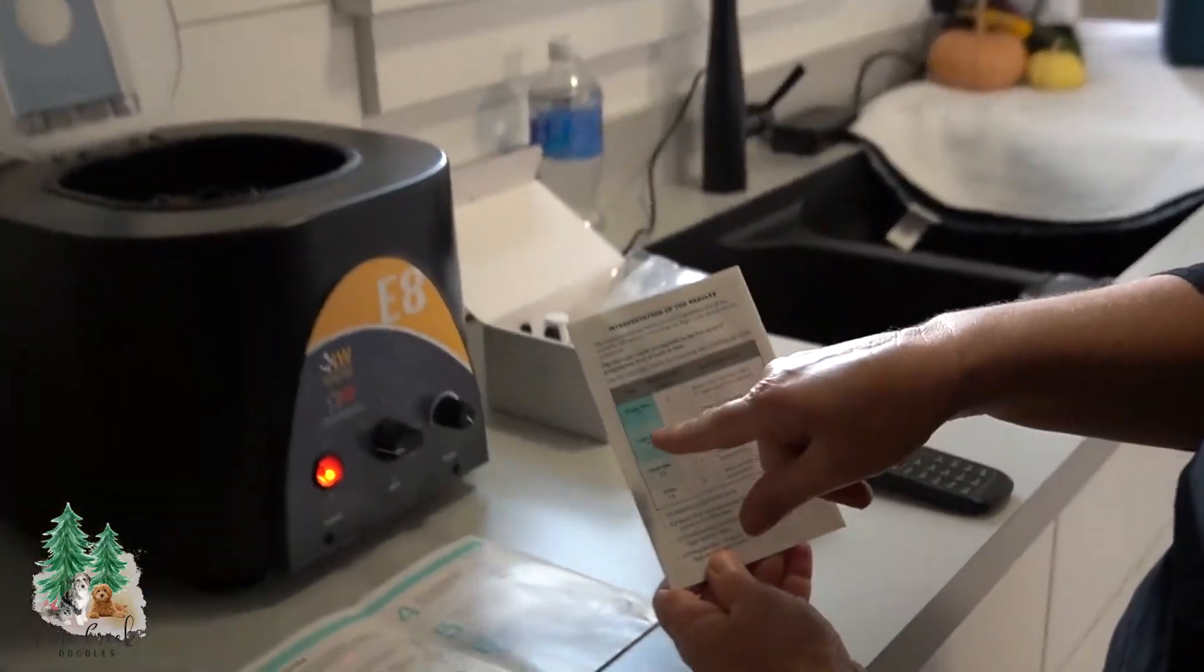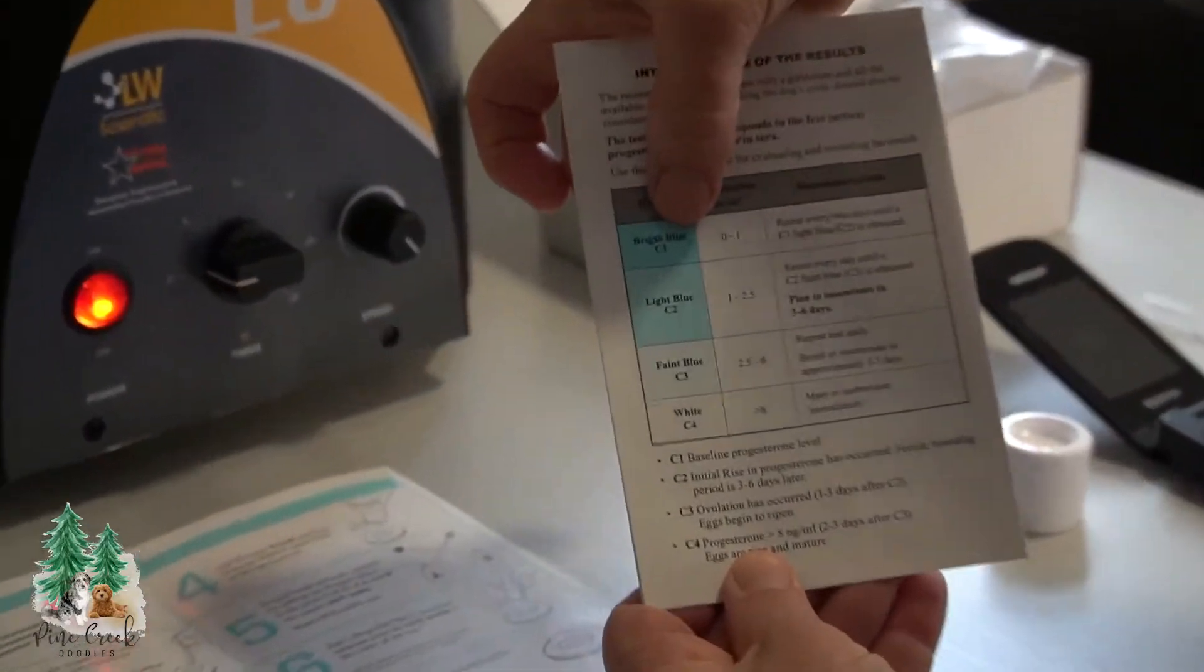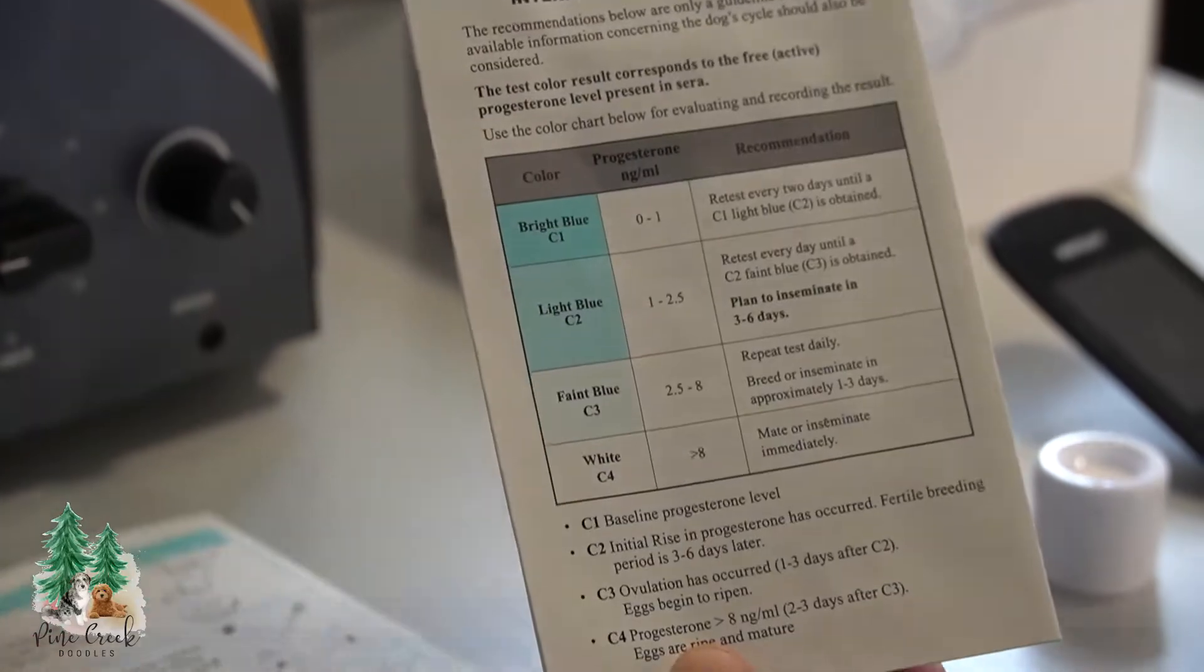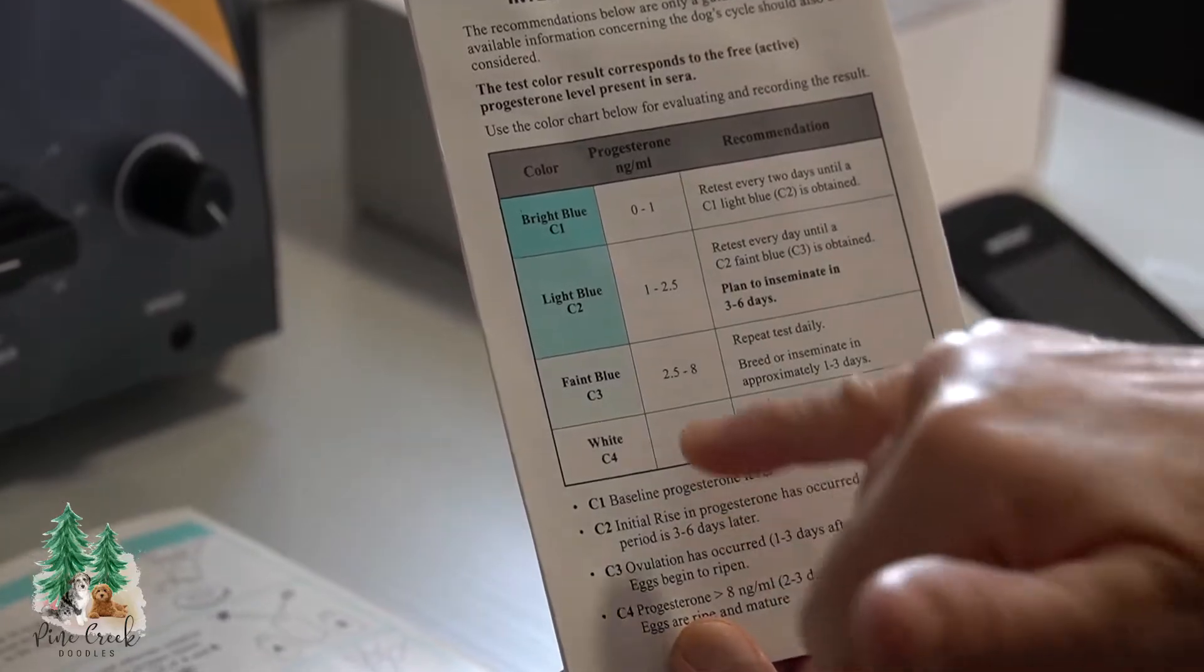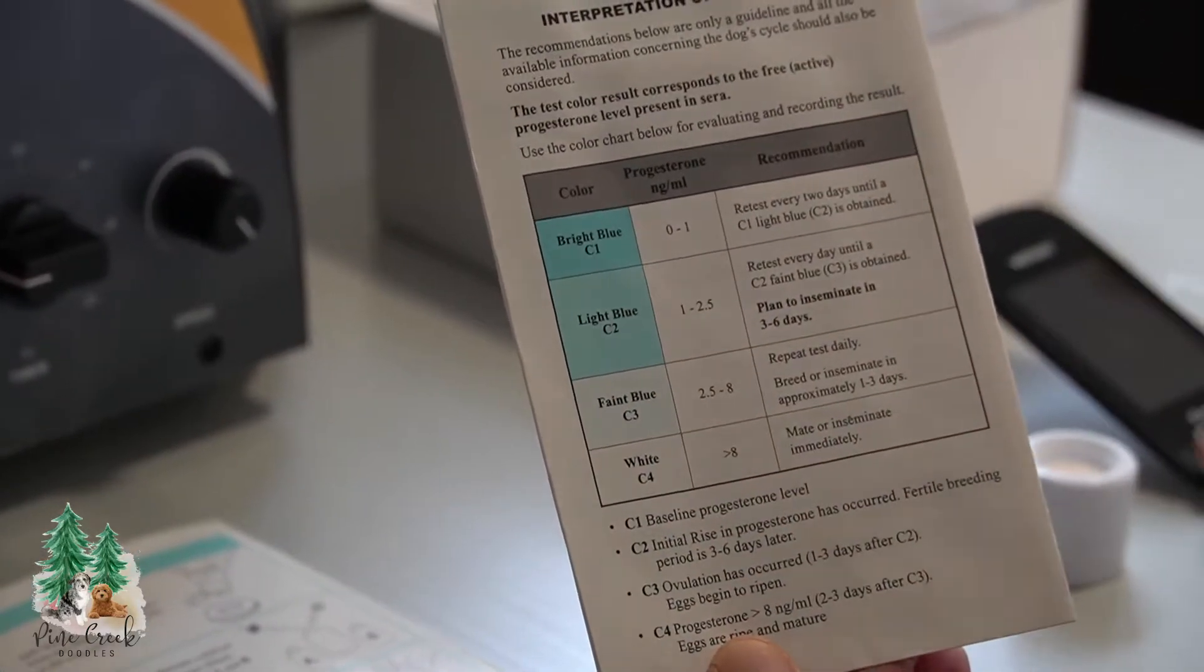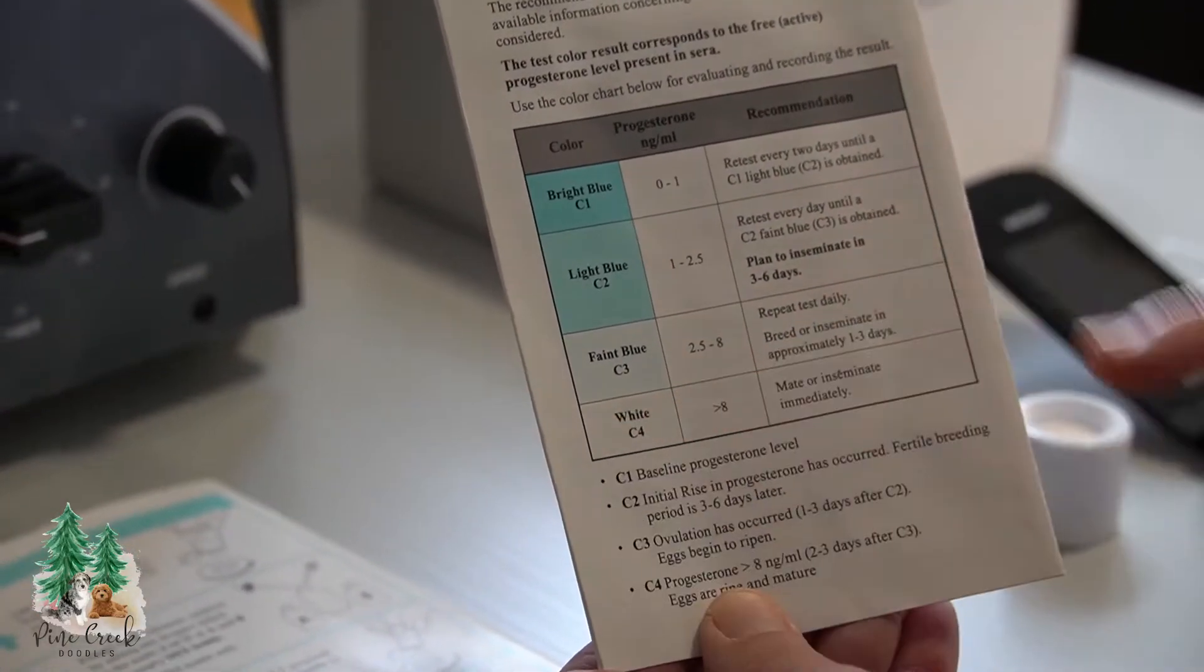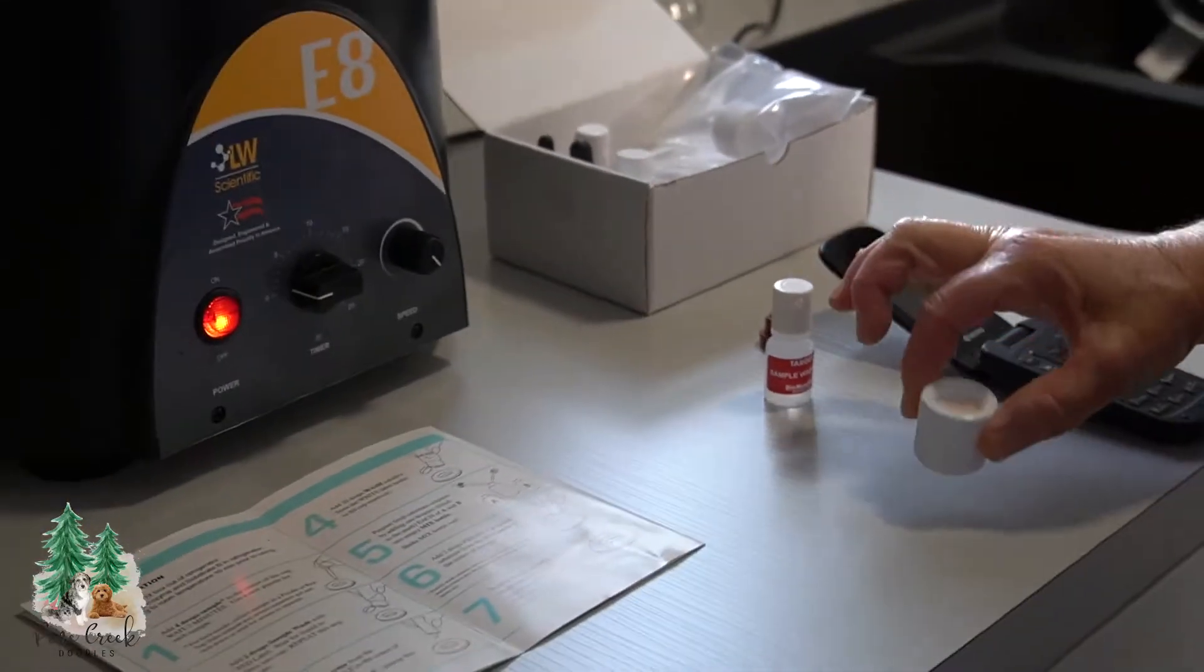And then on here, this is my little booklet that I follow. And then on the back here, you can see where it's, if it's bright blue, it's at the very beginning. You retest every two days. And then when it comes to a light blue, you retest every day. And a faint blue the same way. And then once it turns a white on this little thing, we'll be able to see here.